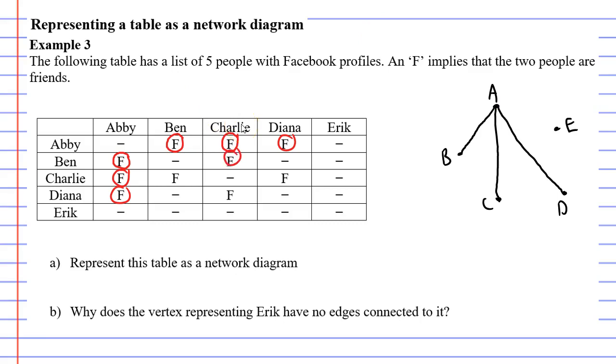Also, Charlie and Ben are friends. So we need to connect B with C.